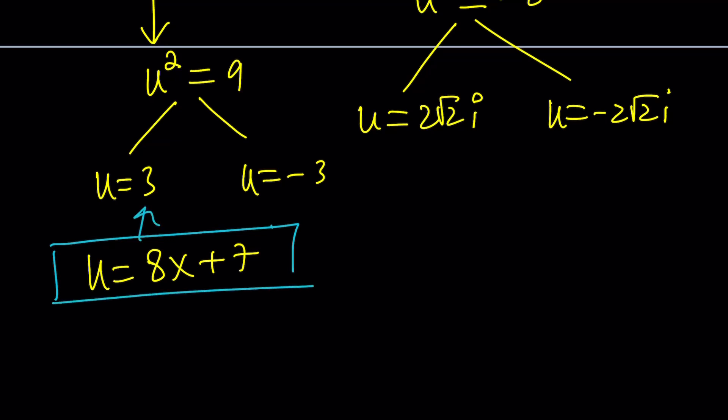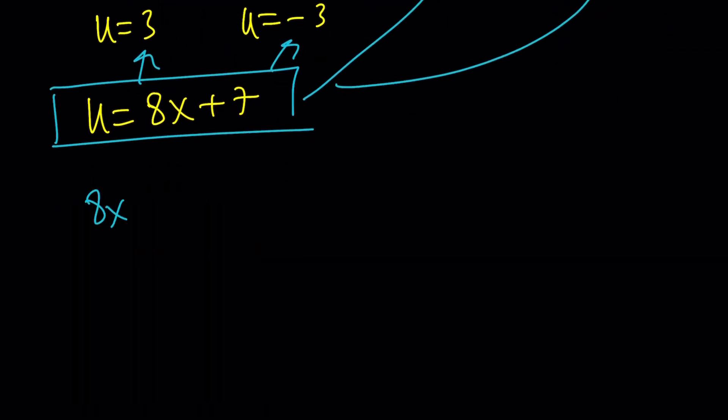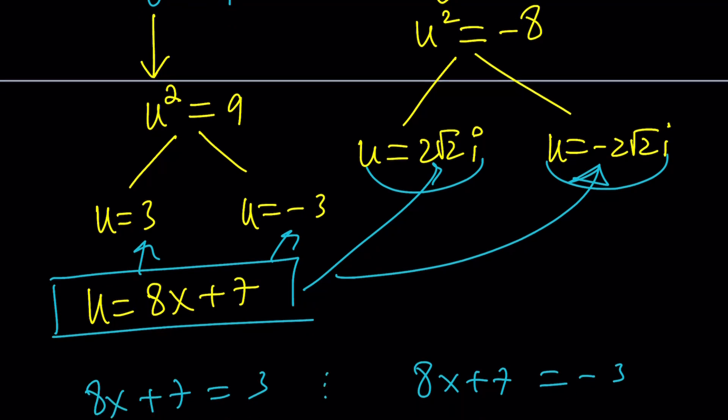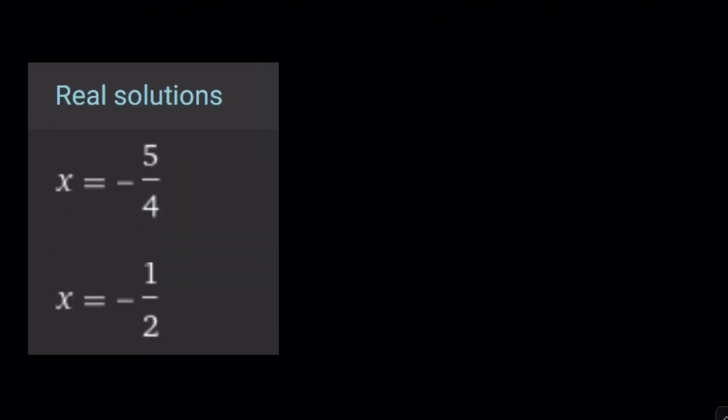Now, we can go ahead and plug in these values and get the x values from there. We're going to look at something else after this real quick. But if you set 8x plus 7 equal to 3, from here, you get x equals negative 1 half. If you set it equal to negative 3, you get x equals negative 5 fourths. If you do the complex, you get the complex, so on and so forth. Easy to do. Those are left as an exercise.